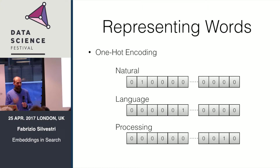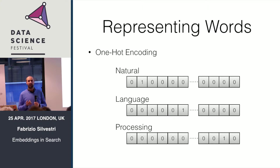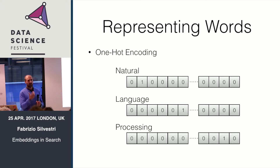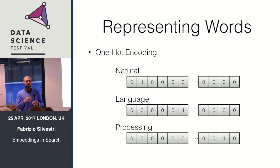One of the possible ways of representing queries is via embeddings. An embedding is a way to map a query or terms of a query into a vector space, so that similar queries will be mapped close together in that vector space.